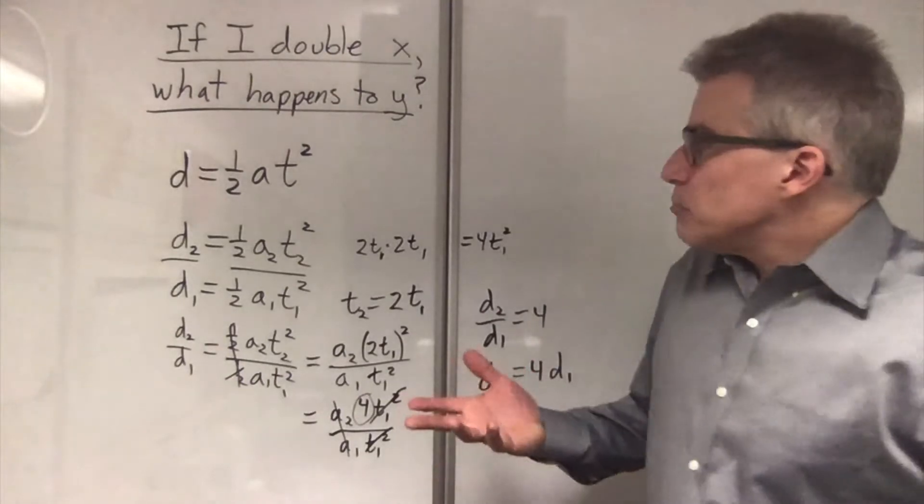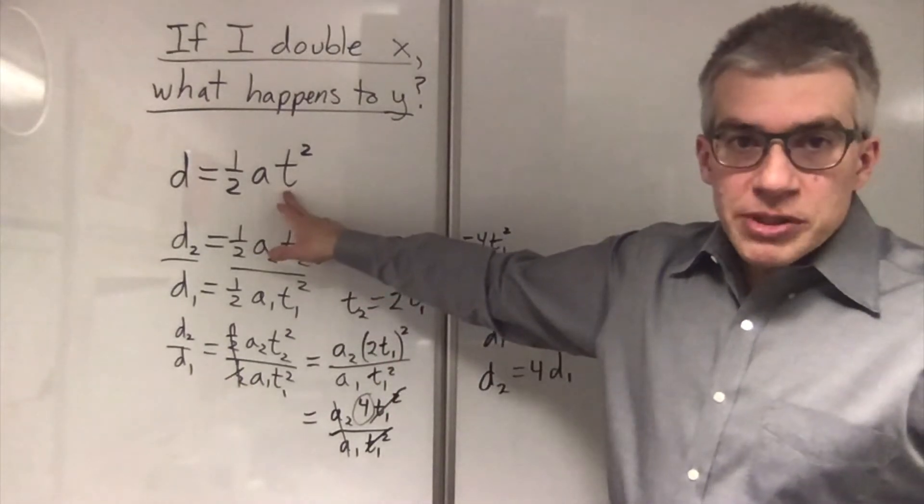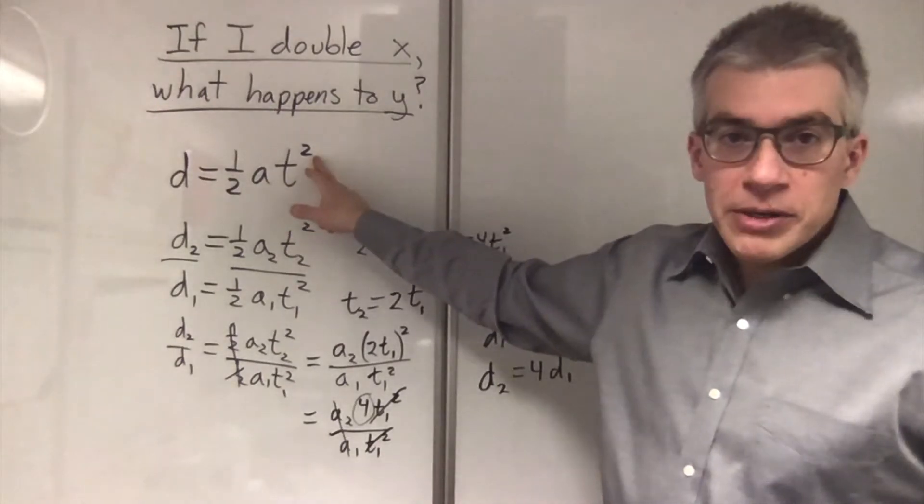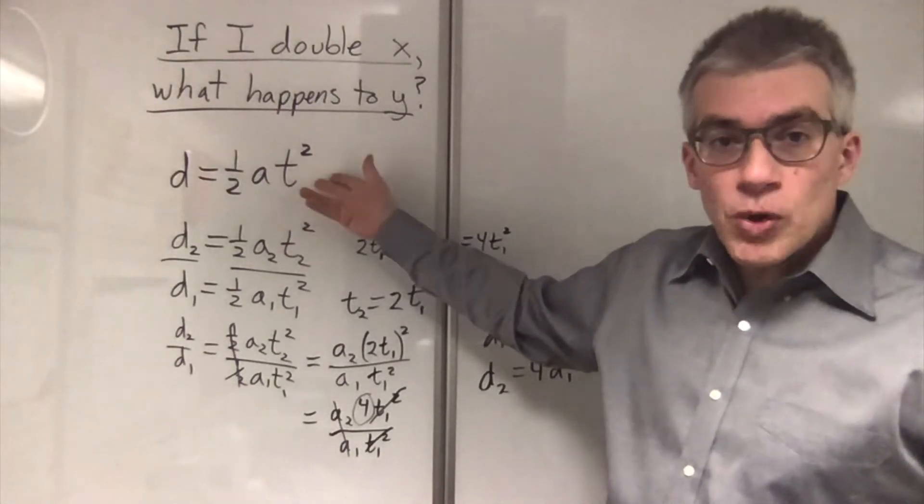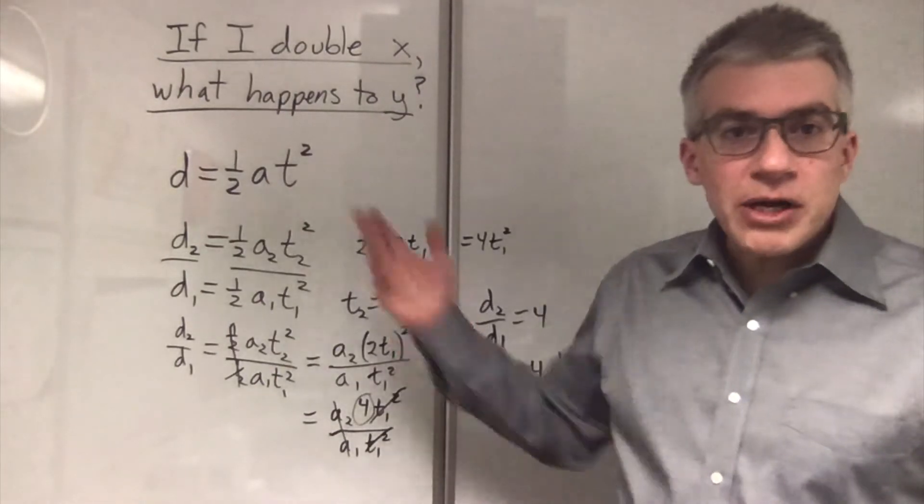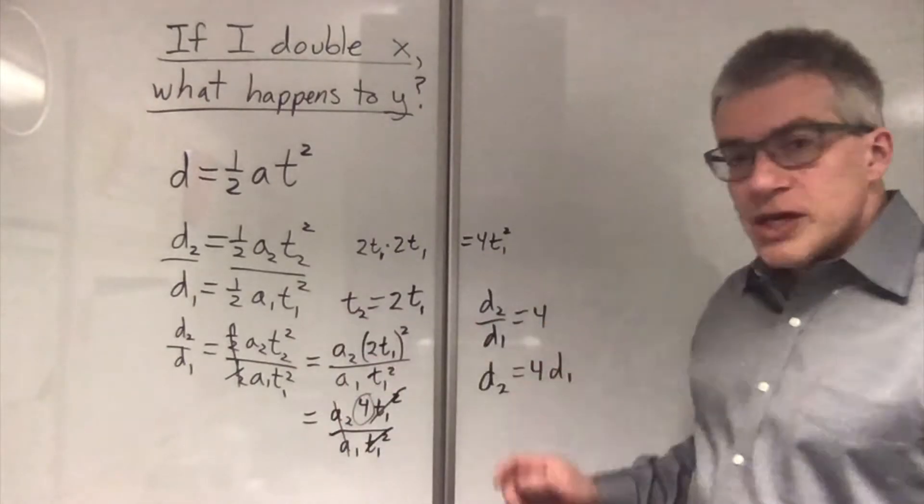First, what's the multiplier on the input? The t is getting doubled. It's like, okay, so I'm taking a 2. What power is the t raised to? It's raised to the second power. So, 2 to the 2. 4 is the multiplier on the distance. There, I got there in a few seconds, instead of having to go through all this.